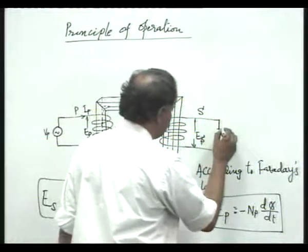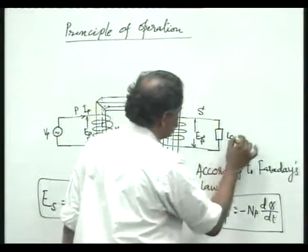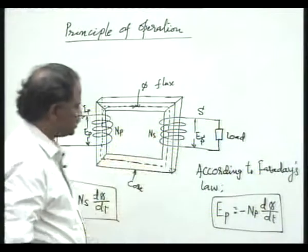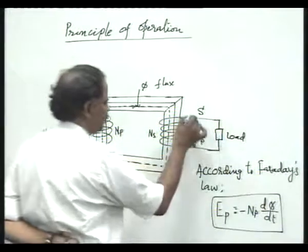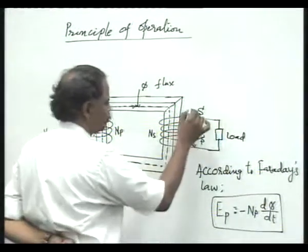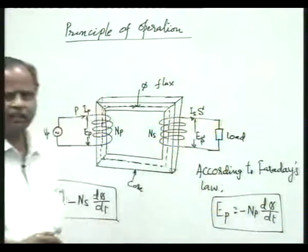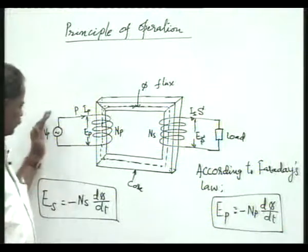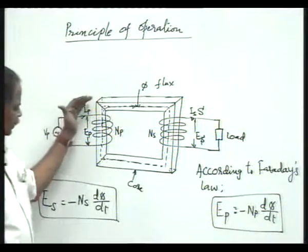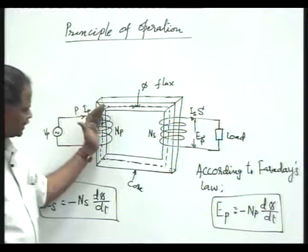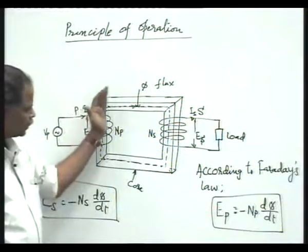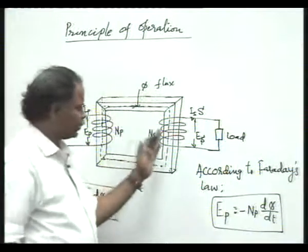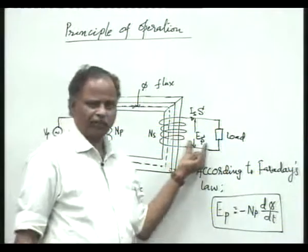So here you need to connect some load. When you connect some load — maybe a resistive load or any other thing — naturally since the load is connected, there will be current that passes. It is called the secondary current. We have given primary voltage, it has created primary current, it has created flux, and this flux passing through the core is cutting each and every turn of the secondary winding and producing a secondary EMF.